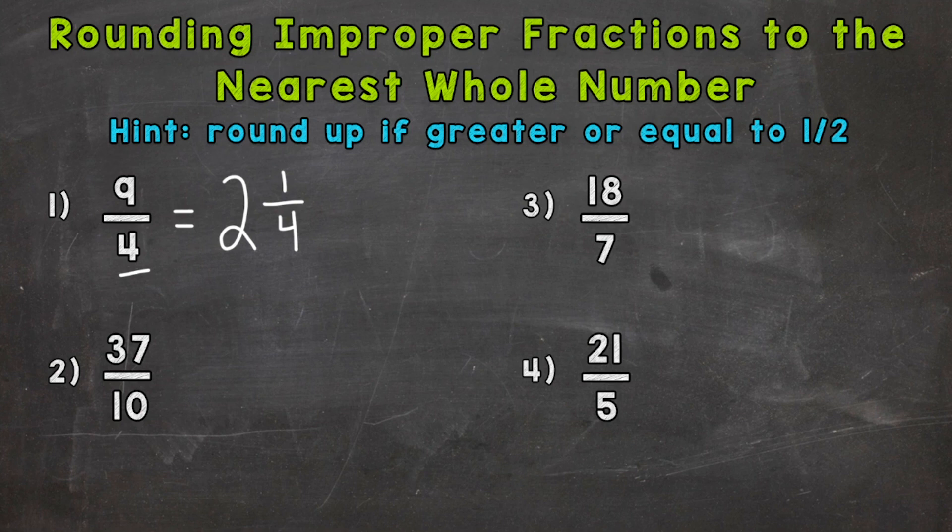Now that we have that mixed number, it's much easier to round to the nearest whole number. So the most important part of this video is right here, our hint. If the fractional part of our mixed number is greater or equal to a half, then we round up. If it's less than a half, then we stay the same as far as the whole number portion goes.